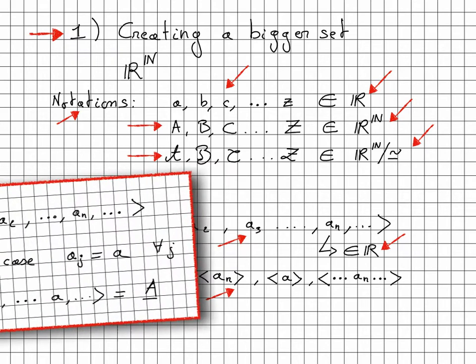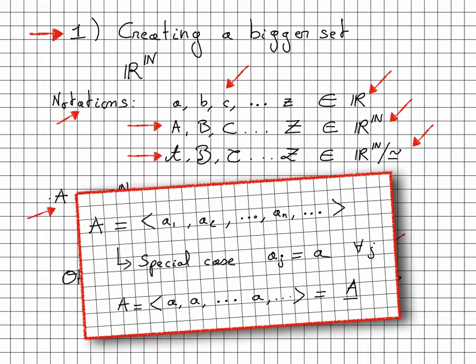And I can tell you right now that a special type of sequence, a constant sequence in which all the elements are identical, we will be able to show that those map onto the real numbers. So if I want to be explicit, I will write capital A with a bar below to express the fact that this is a constant sequence.